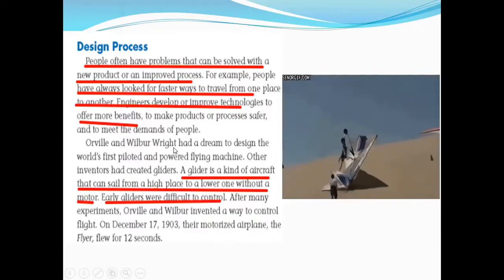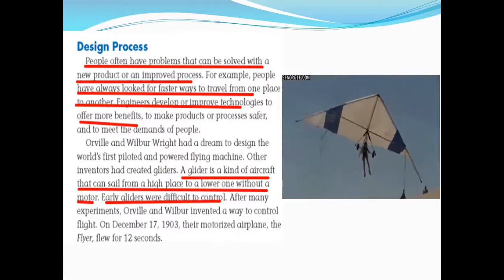Orville and Wilbur Wright had a dream to design the world's first piloted and powered flying machine. Other inventors had created gliders, like this is a glider, as you see in the picture here. So, what is a glider? A glider is a kind of aircraft that can sail from high place to lower one without a motor. There is no motor here, as you see in the picture.